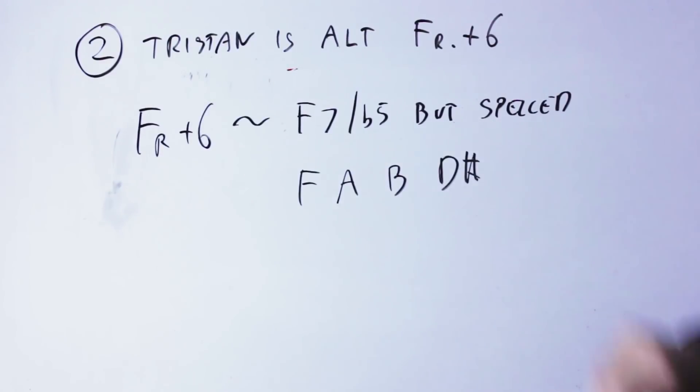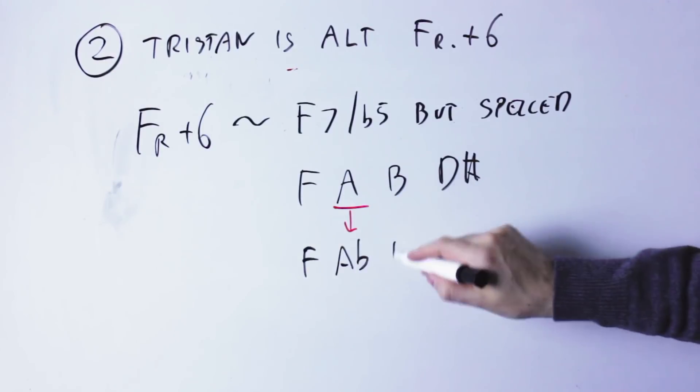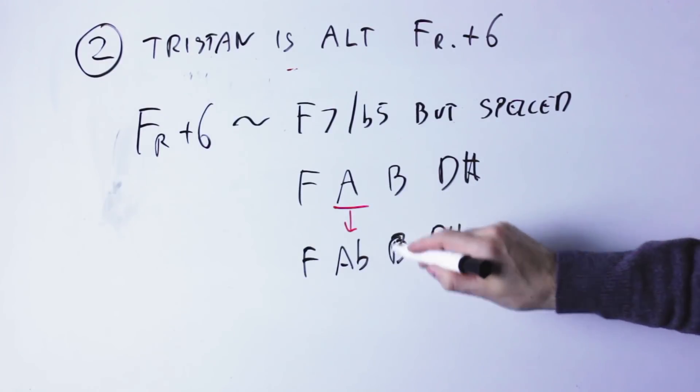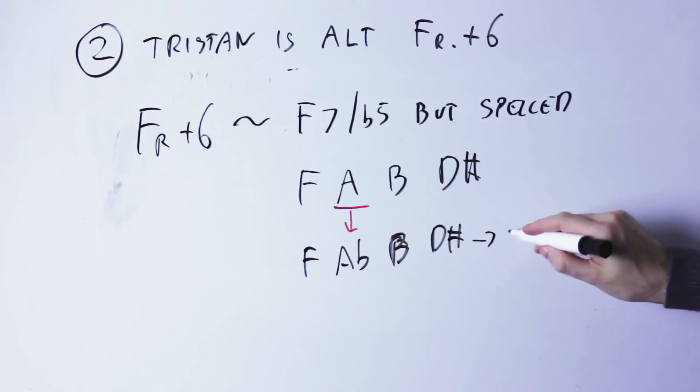So it's in fact spelled F A♭ D♯. Now, if we take the A in this chord, which is the major third of the chord, and we alter it to an A flat, then this becomes, indeed, the Tristan chord.